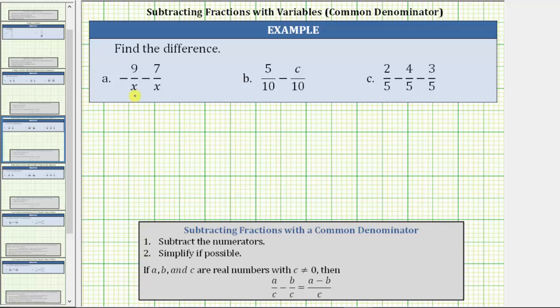For a, we have negative nine over x minus seven over x. Because this first fraction is negative, to keep track of the negative sign, we will move the negative sign into the numerator and write this as negative nine over x minus seven over x.